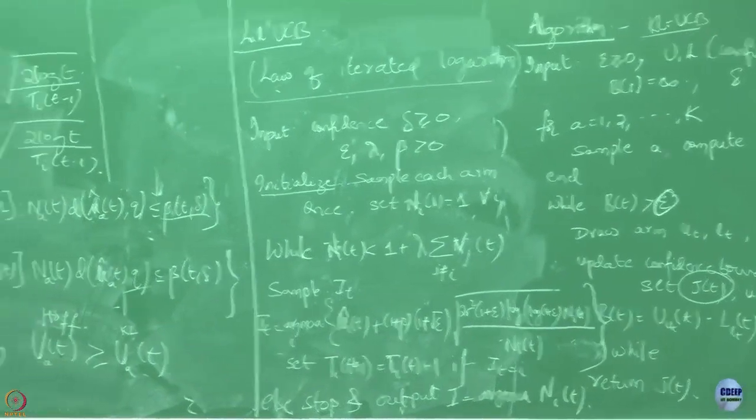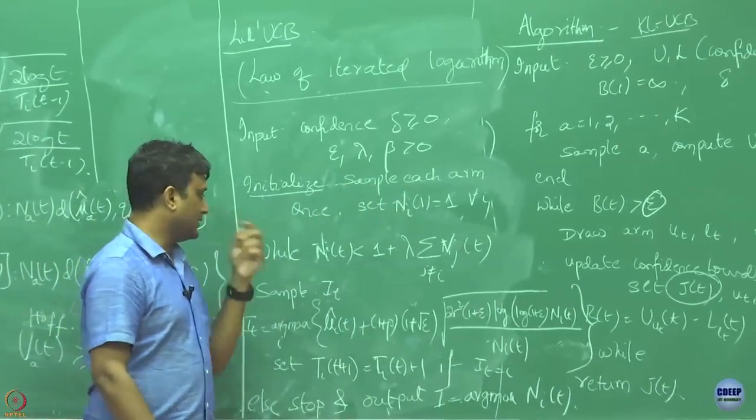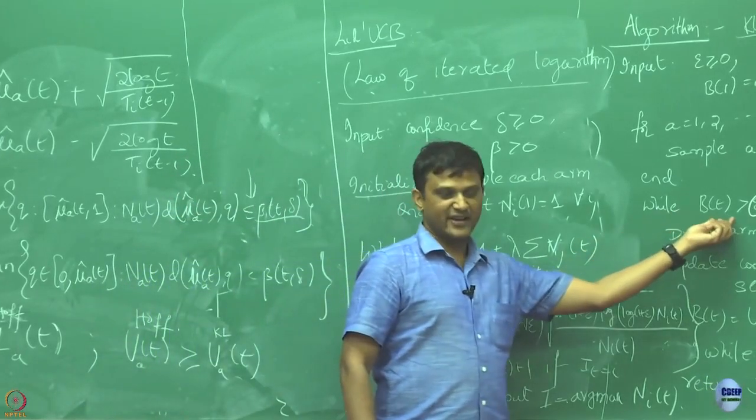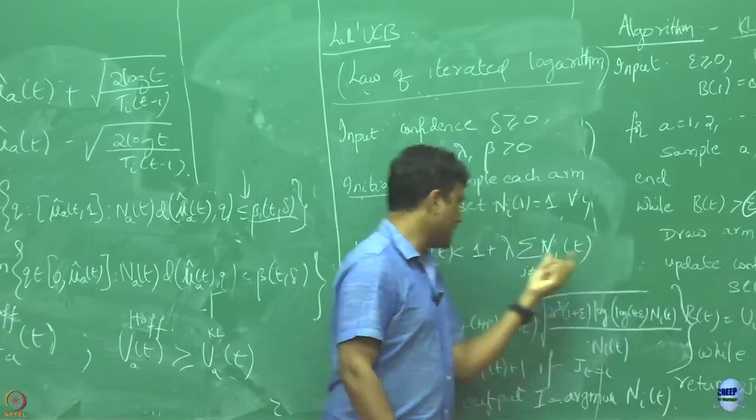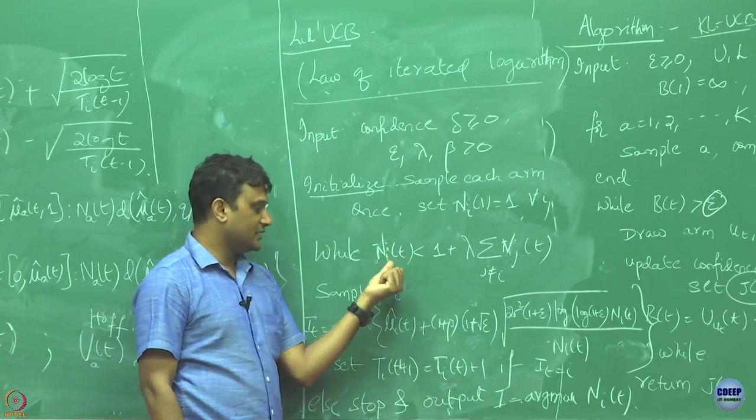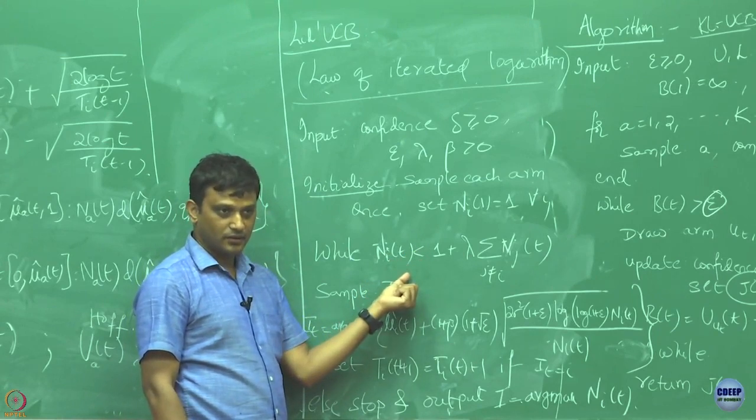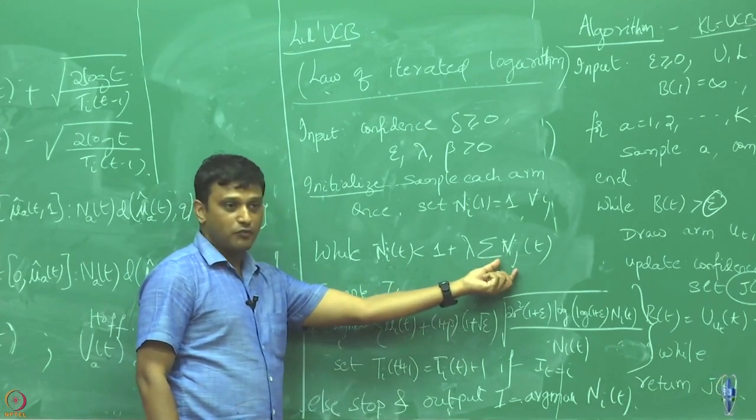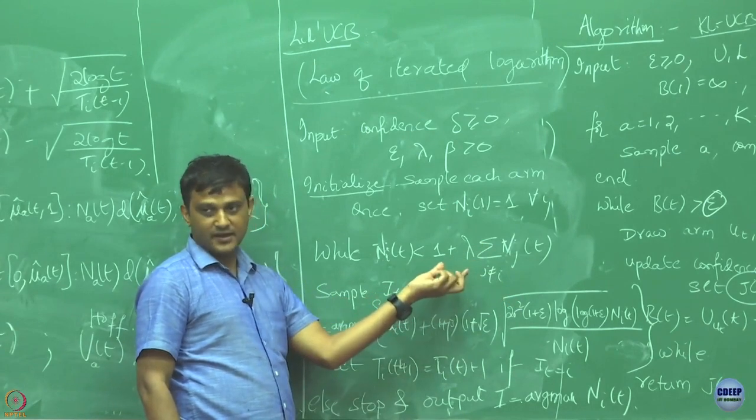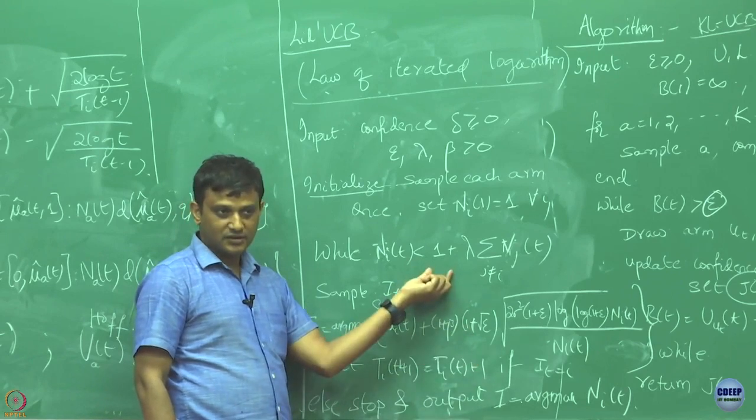What this algorithm is doing is it initially samples everybody once and then this is the stopping criteria for this algorithm. Like here the stopping criteria was whether the BT is going to be epsilon or not. Here it is going to check. When this condition is going to be violated if for some N_i happens to be larger than the sum total number of pulls of all the others, whenever that has happened then this criteria is violated and it is going to stop otherwise it is going to continue.